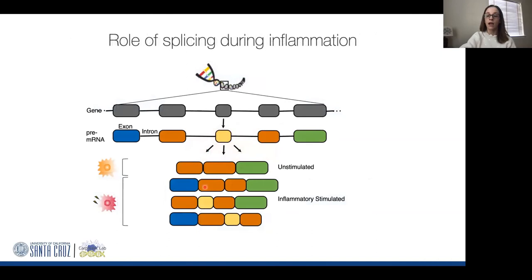In the context of this talk, we're interested in the role that splicing is playing during inflammation. I know this audience doesn't need an introduction to splicing, but essentially splicing allows for a huge increase in the repertoire of proteins produced. We're asking: is there a difference in splicing patterns between unstimulated cells and cells that have undergone inflammatory activation, focusing specifically on macrophages?